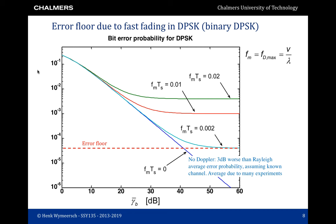Last time we also saw the performance of differential phase shift keying in fast fading conditions. The figure shows on the x-axis the average SNR due to path loss and shadowing, and on the y-axis the bit error rate. Different curves correspond to different Doppler shifts, where fm is the maximum Doppler shift — the velocity of the user over the wavelength. When the Doppler shift is 0, we have the dark blue curve for fm equal to 0, which is almost the same as the Rayleigh fading case. There is a 3 dB penalty in average error probability over Rayleigh with a known channel — Rayleigh with coherent detection would be 3 dB to the left.